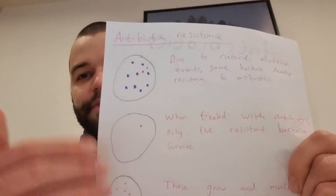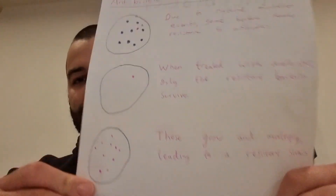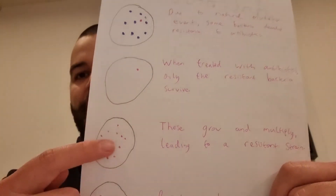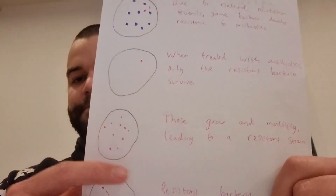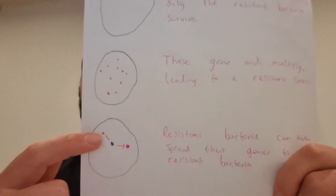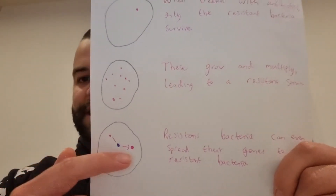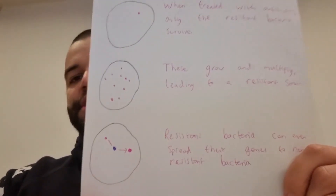Obviously bacteria grow and divide pretty quickly, so in not too long, lots and lots of bacteria that have all inherited that resistance will be present. And to make matters even worse, they can even pass on their resistance to non-resistant bacteria as well. So this is a huge issue at the moment in science. Bacteria naturally may mutate resistance to antibiotics, but when antibiotics are overused, that can result in resistant strains becoming more and more common. There's a fantastic video by Kurzgesagt on the concept of antibiotic resistance — I will link that to you so you can watch that as well, which goes into it in a bit more depth.